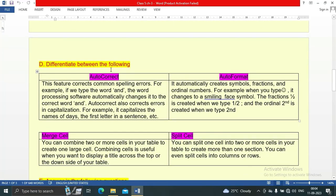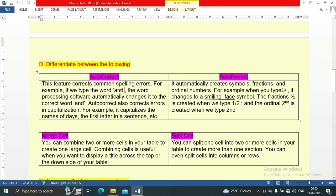Differentiate between the following. Autocorrect: This feature corrects common spelling errors. For example, if we type incorrect letters, the word processing software automatically changes it to the correct word. Autocorrect also corrects errors in capitalization, for example it capitalizes the names of days and the first letter in a sentence.